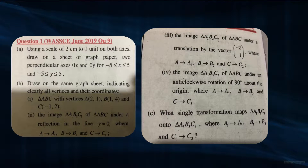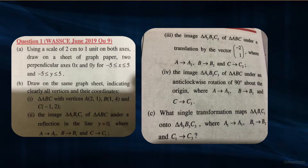Using a scale of two centimeters to one unit on both axes, draw on a sheet of graph paper two perpendicular axes OX and OY for x being greater than negative five and less than five, and y being greater than negative five and less than five. Draw on the same graph sheet, indicating clearly all vertices and coordinates: triangle ABC with vertices A(2,1), B(1,4), and C(-1,2).